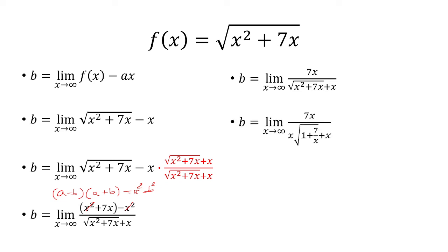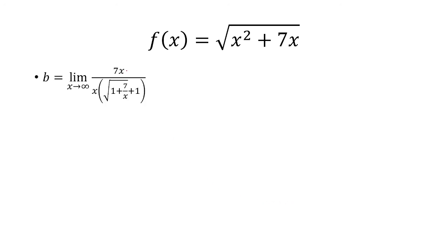And now in the bottom here, I can factor out an x squared, kind of like what I did in the previous slide. It was like x squared, and then 1 plus 7 over x. The x squared comes out as x. And then, I can factor out an x from both terms here. So, that becomes x times the quantity, the square root, and then plus 1. The x's are going to cancel. So, I have 7 over the square root plus 1.